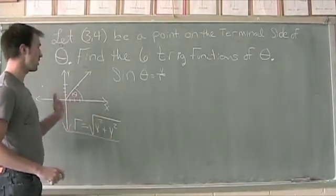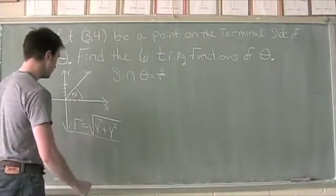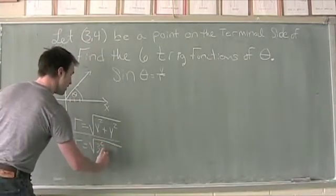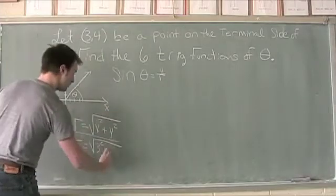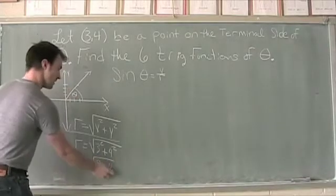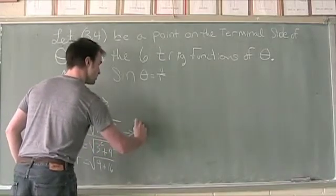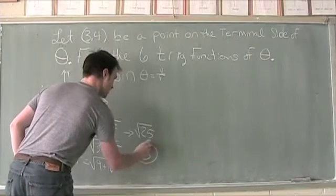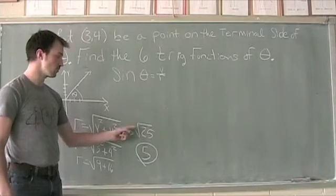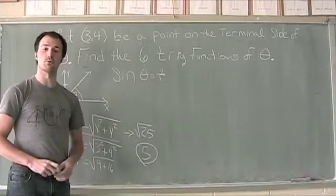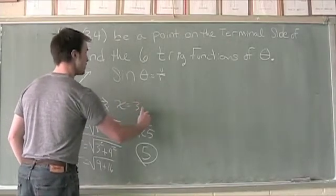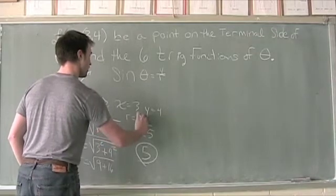So r is equal to the square root of x squared plus y squared. Substituting in, r equals the square root of 3 squared plus 4 squared, which is the square root of 9 plus 16, which is the square root of 25, giving us positive 5. R is always going to be a positive value — we're always looking for the principal root. So x equals 3, y equals 4, and r equals 5.